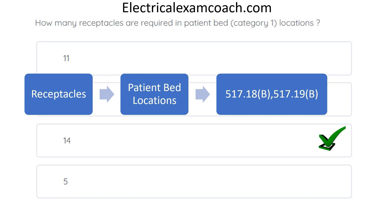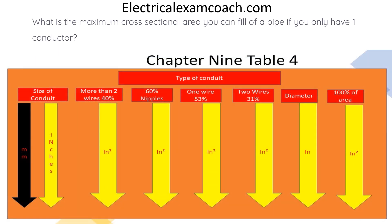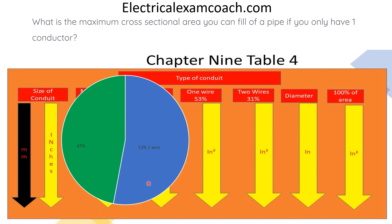What is the maximum cross-sectional area you can fill a pipe if you only have one conductor? The correct answer is 53%. We find this in Chapter 9, Table 4. We always make sure to check the type of pipe, though in this case it doesn't matter because the value is the same across all tables. If you have more than two wires it's 40%, a nipple allows 60%, and with only one wire — such as a grounding electrode conductor — you're allowed to fill that pipe 53%.